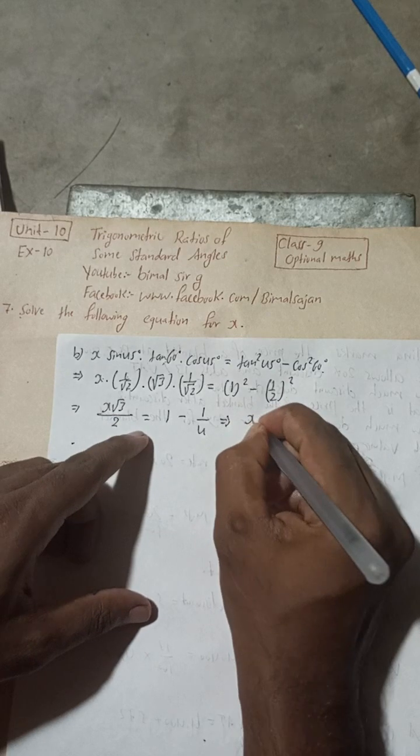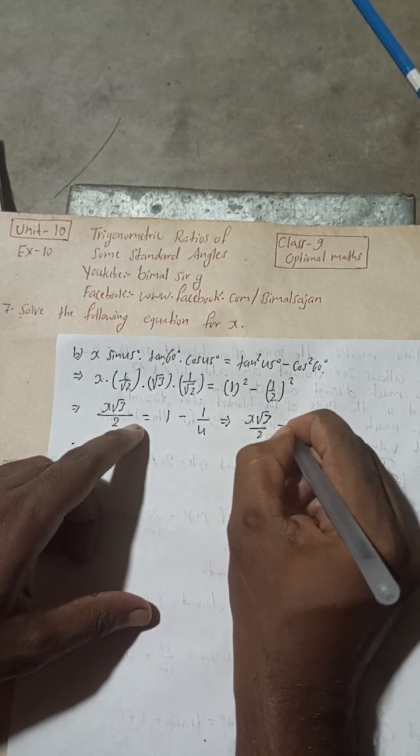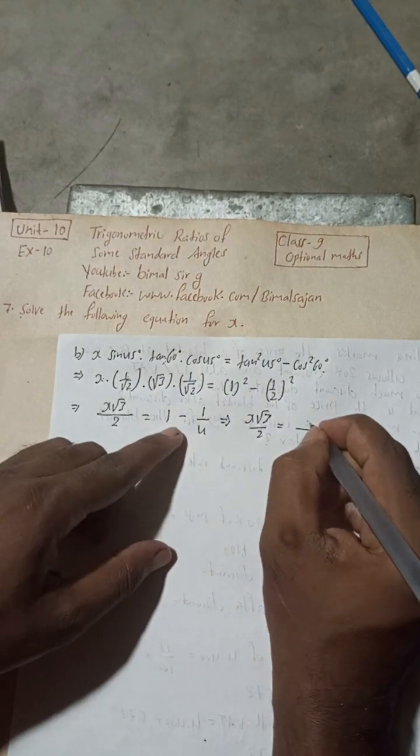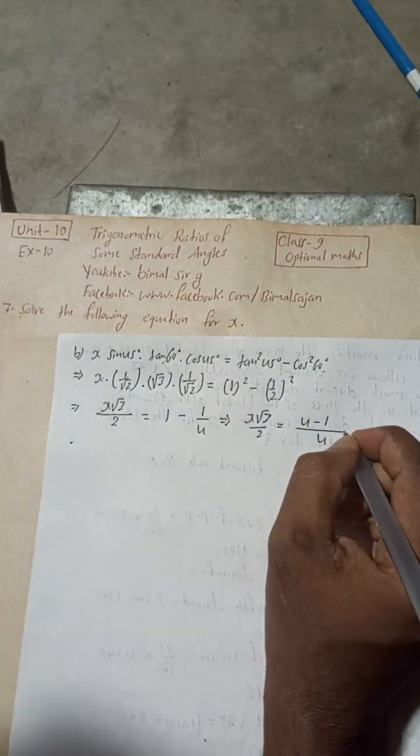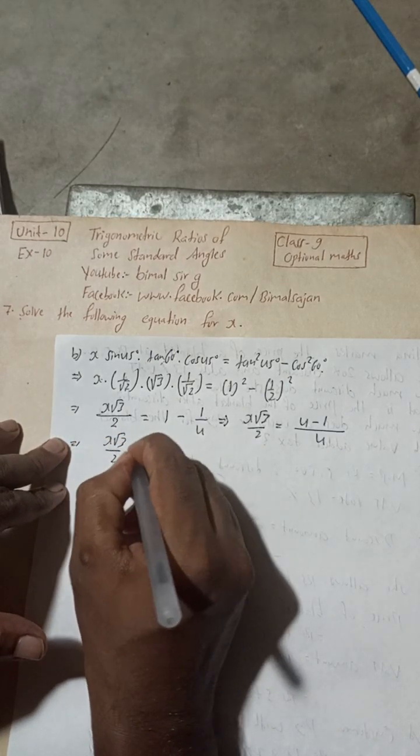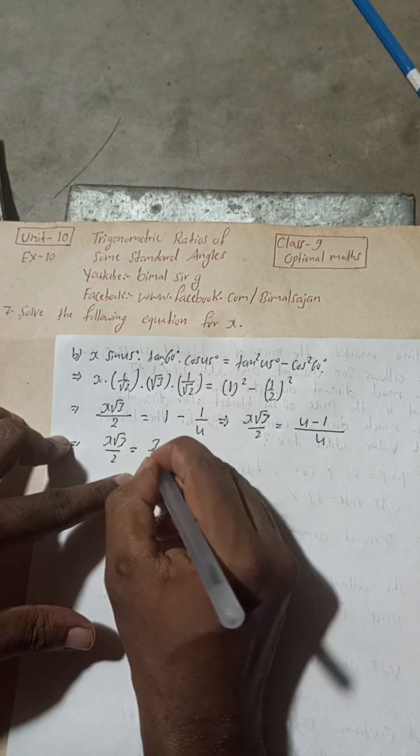So now this you can write here implies x root 3 by 2 is equal to, LCM is here 4, so 4 into 1 is 4 minus 1, so now this is equal to x root 3 by 2 is equal to 3 by 4.